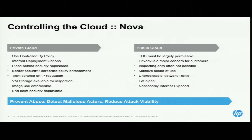Nova has a whole bunch of similar problems. In a private deployment, you can configure who can deploy what sorts of image, and you can force users to deploy images with certain controls — endpoint security, encryption, IDS, antivirus — everything your IT company says you need. We can't do any of that in the public cloud. We have people spinning up all sorts of things, installing all sorts of stuff, because they see it as a disposable resource. We get insecure VMs popping up all the time and some of them do get abused.